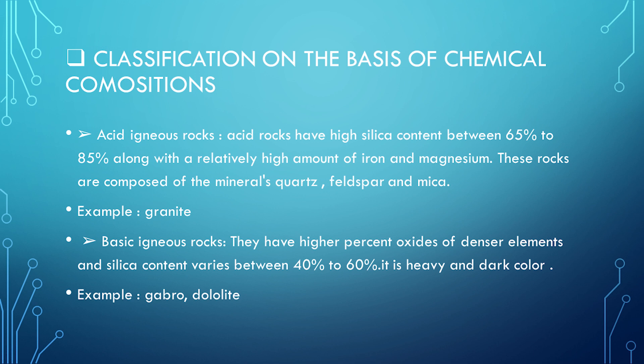Classification on the basis of chemical composition: acid igneous rocks and basic igneous rocks. Acid rocks have high silica content between 65% to 85%, along with a relatively high amount of hydrogen and magnesium. These rocks are composed of the minerals quartz, feldspar, and mica. Example: granite. Basic igneous rocks have a higher percentage of denser elements and silica content varies between 40% to 60%. They are heavy and dark in color. Example: gabbro/dolerite.